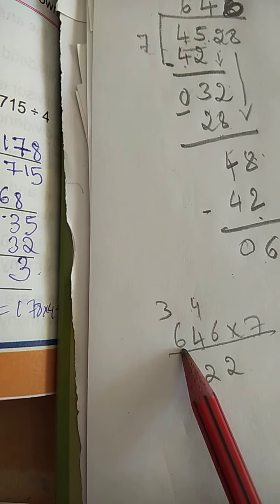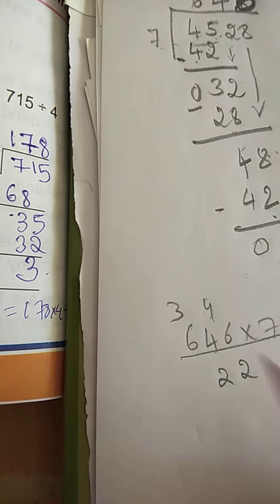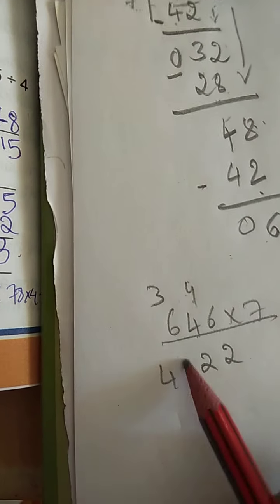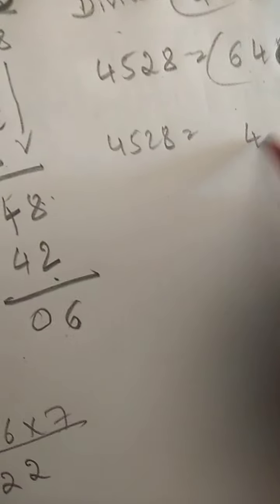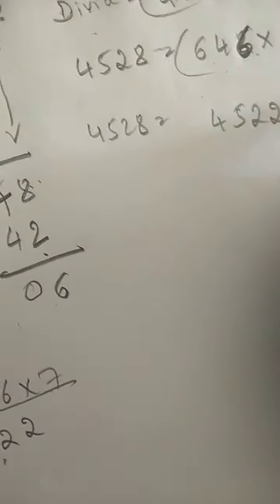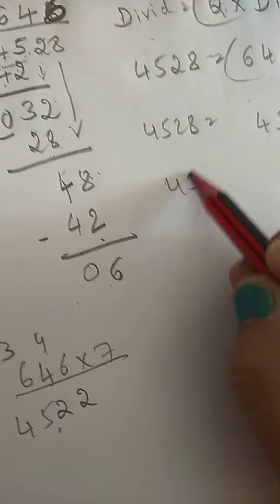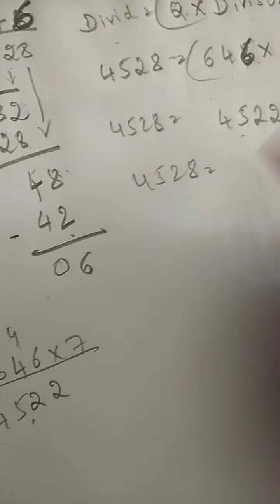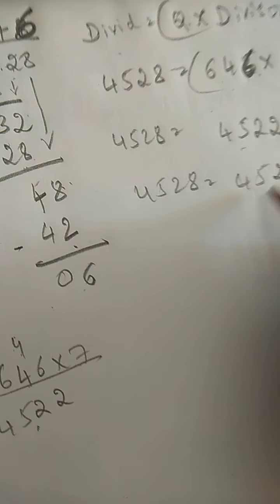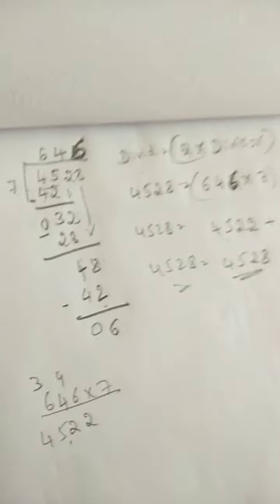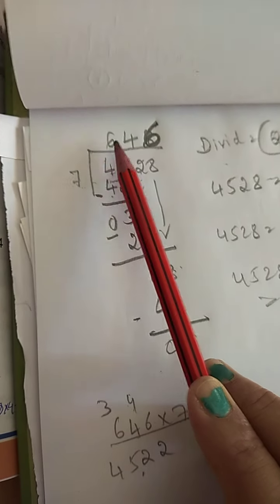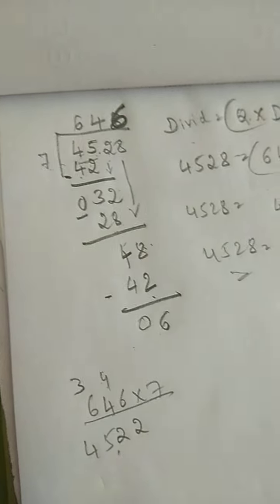Then 7 times 6 is 42, 43, 44, 45. 4,522 plus 6. 4,528 is equal to 4,528. So verification is correct. So answer is quotient is 646.